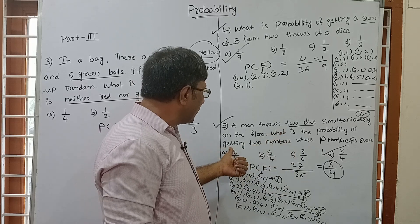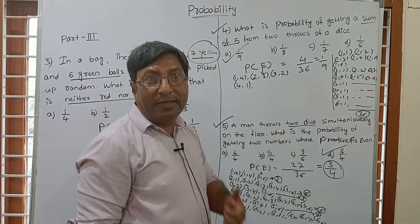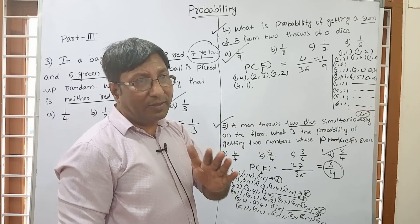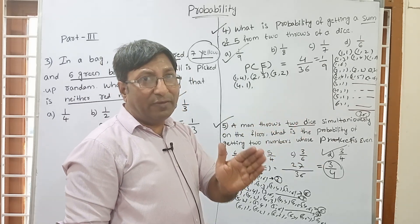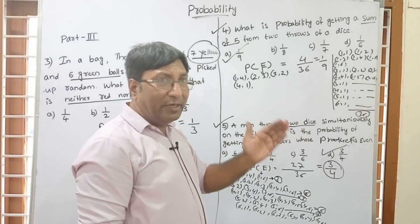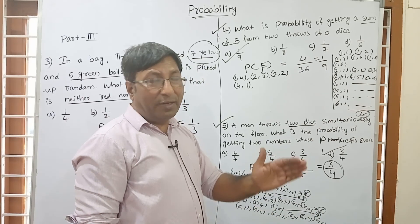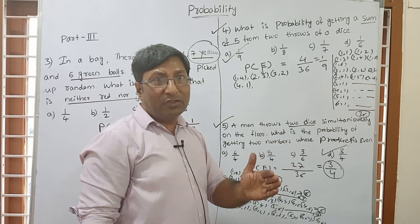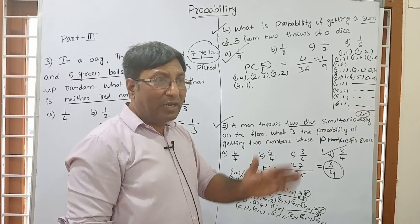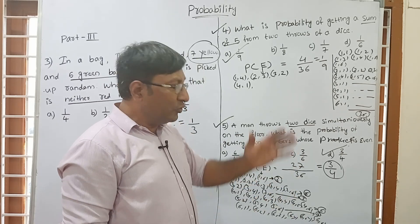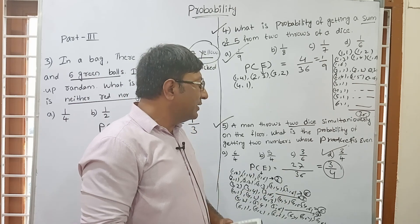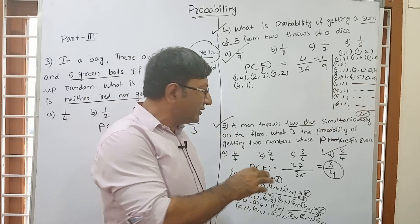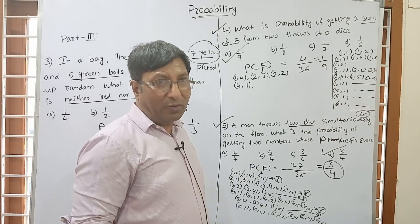When 2 dice are thrown simultaneously, probability of getting 2 numbers whose product is even: for odd first die (1, 3, 5) you get 3 even-product pairs each; for even first die (2, 4, 6) you get 6 each. So total favourable is 27, out of 36. Correct answer is 3 by 4. Watch all 5 questions and you will understand everything better. Thank you.